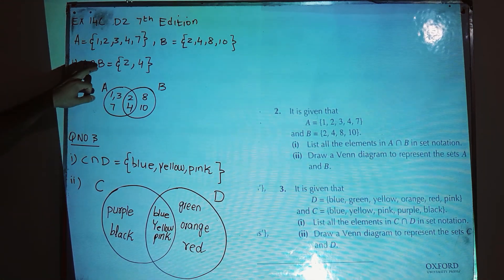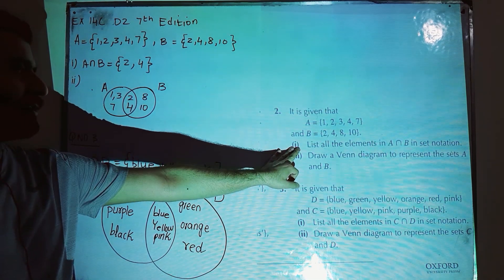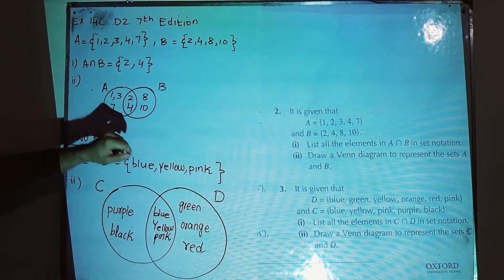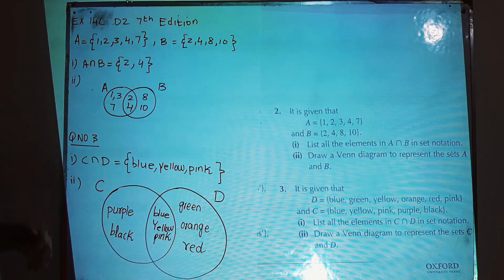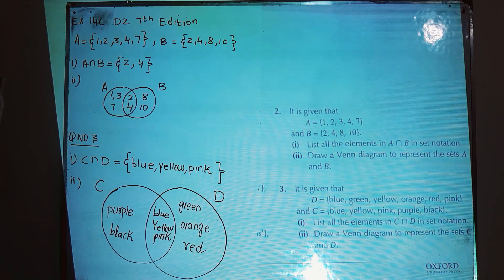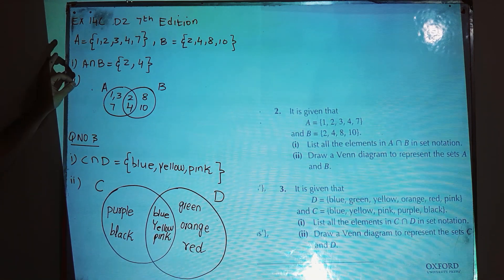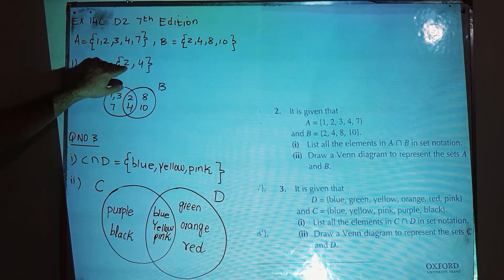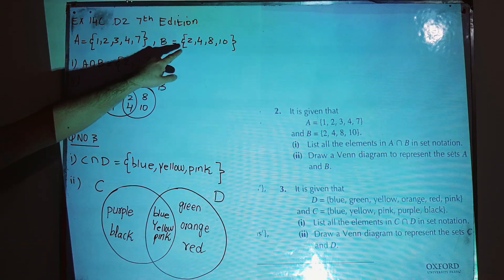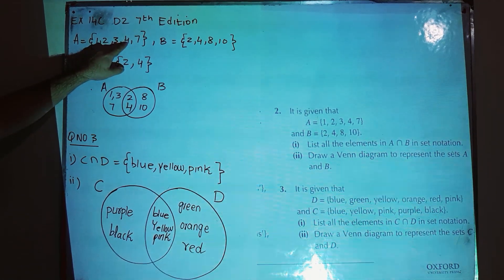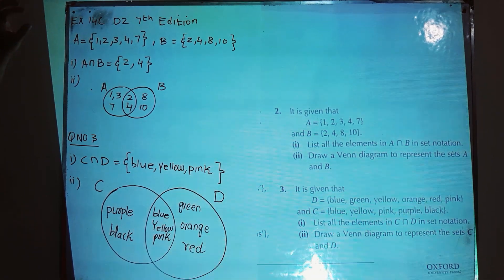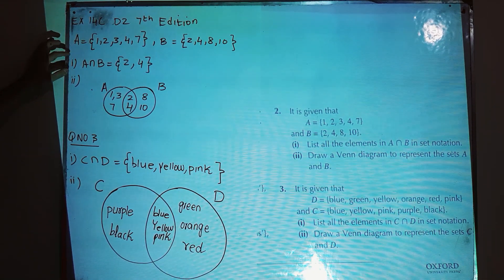For part one, list all the elements in A intersection B in set notation. A intersection B means a set that contains all those elements which are common to both A and B. Two is present in A as well as in B, and four is present in A as well as in B, so the set of common elements will be the answer for A intersection B.